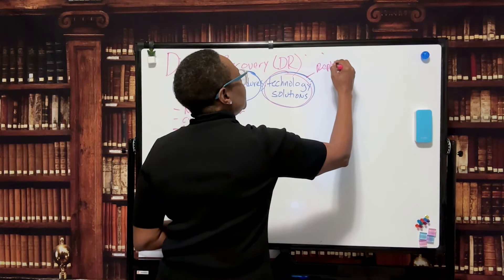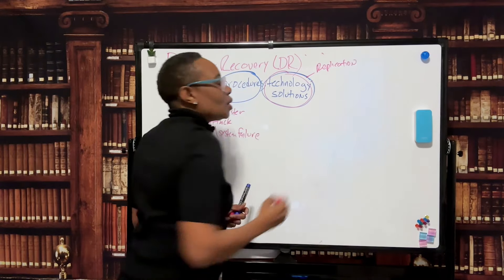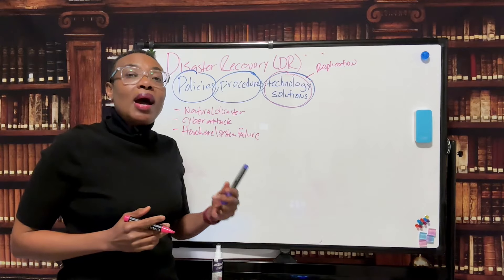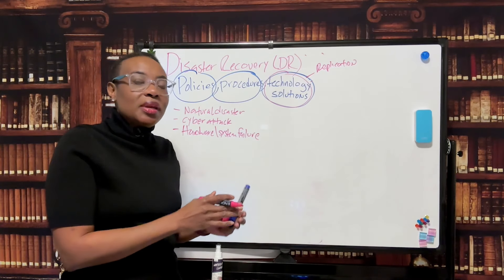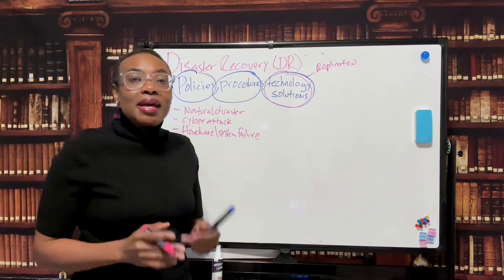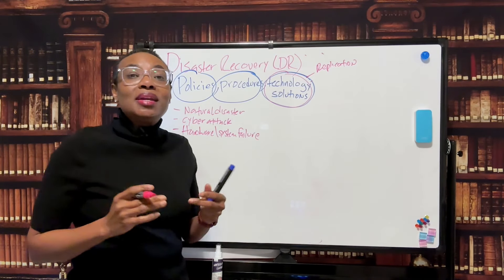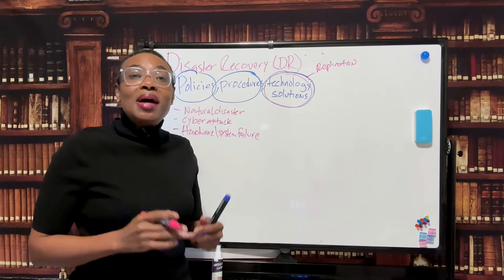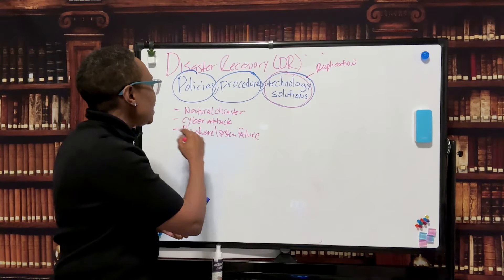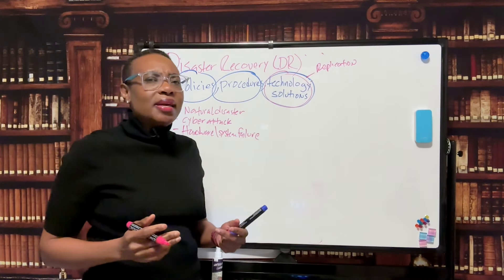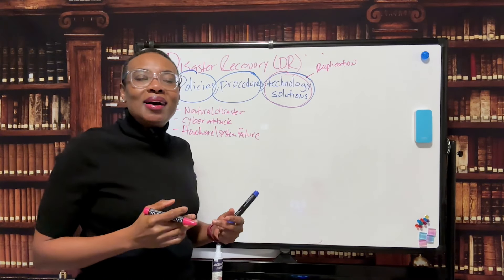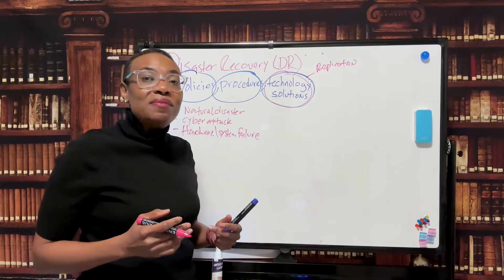We have replication. And replication is real-time or near real-time copying data from the primary source, meaning the primary data center, to some secondary location. And ideally that secondary location needs to be in another geographical location and on another network or domain to really provide protection from a natural disaster or cyber attack. Because if the secondary site is only 20 miles away and there's some type of natural disaster or natural event, guess what? It is not going to be protected because it is in the same location.